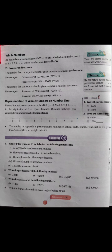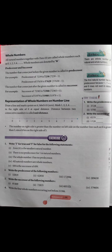Equal distance par points laane padte hain jaise 0, 1, 2, 3. Jis point ko bhi question mein poochha jaaye — jaise 'mark 2 on the number line' — to hum 2 ko dotted line ya dark line se represent karte hain: this is our 2 on the number line.